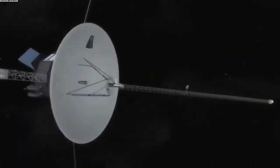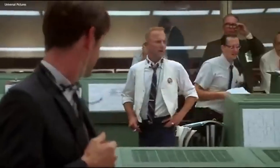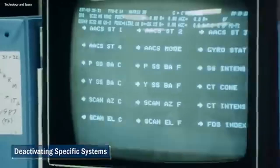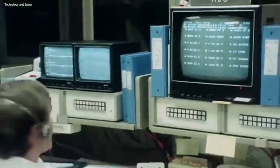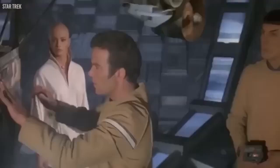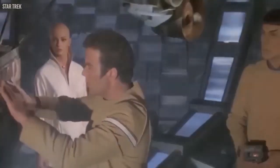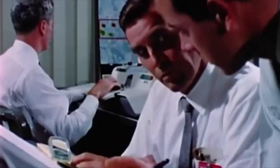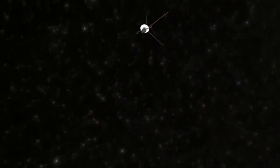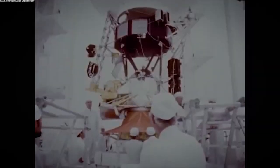Voyager 1's mission is a testament to human ingenuity and curiosity. Launched on September 5, 1977, it was initially intended to study the outer planets of our solar system. Its mission was to explore Jupiter and Saturn, their moons, and the rings around Saturn. The spacecraft provided groundbreaking insights and stunning images, including detailed photographs of Jupiter's great red spot and the intricate structure of Saturn's rings. Voyager 1's close flybys of these planets revealed new moons and delivered unprecedented data about their atmospheres and magnetic fields.